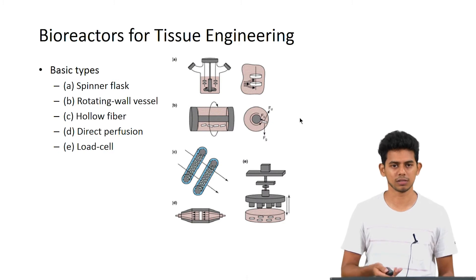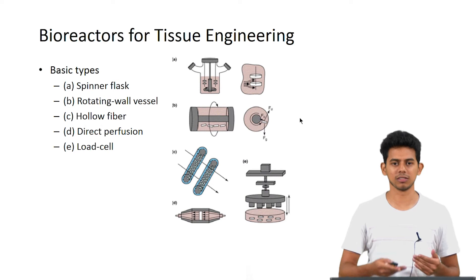The second one is the rotating wall vessel wherein the cells remain in suspension and the bioreactor keeps rotating. This offers some slight degree of shear stress which is required for cell lines like epithelial cells.